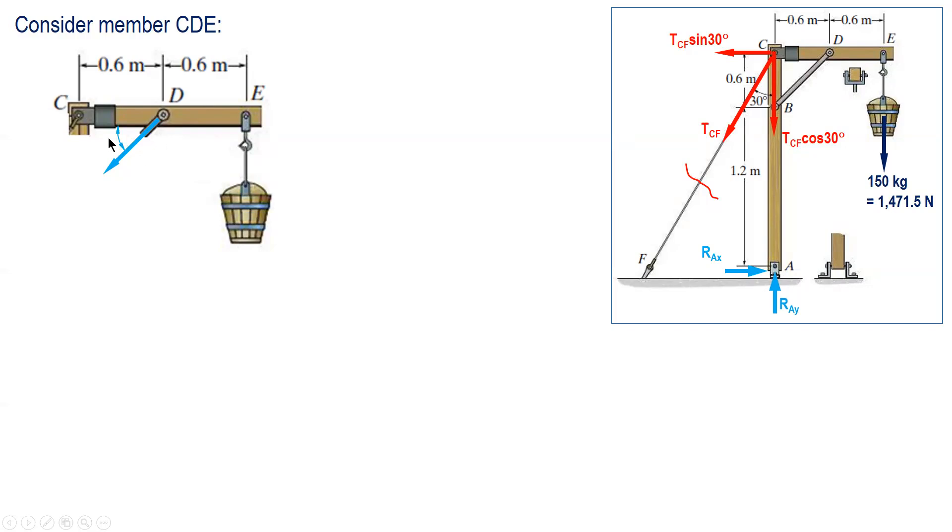So this angle is, although not given, but based on the dimensions 0.6 and 0.6 equal, so this angle is 45 degrees. So we have this one, FBD cosine 45, or FBD cosine 45 and FBD sine 45. And then we have this weight of 1471.5 newtons. So summing up moment about C, we can solve for FBD.